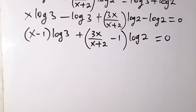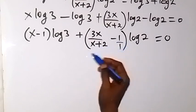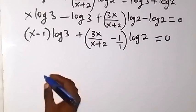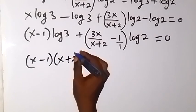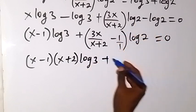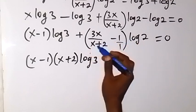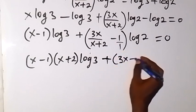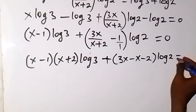From here we can remove the fraction by multiplying through by x plus 2, since the LCM is x plus 2. This gives us (x minus 1)(x plus 2) log 3 on this side. Then on the other side, x plus 2 cancels with the denominator, and x plus 2 times minus 1 gives minus x minus 2. So what is left is 3x minus x minus 2, which gives log 2 equals 0.